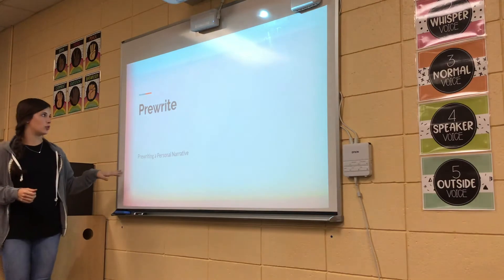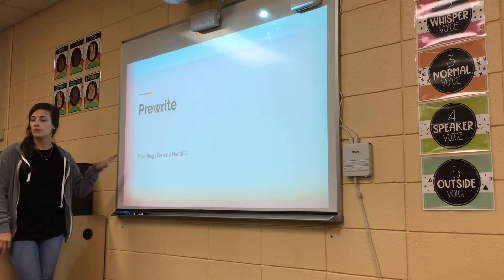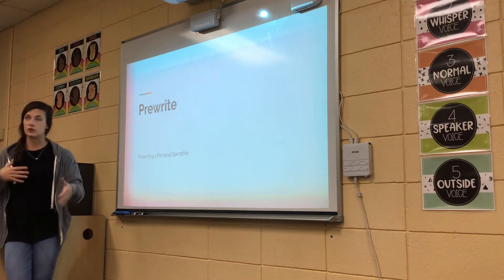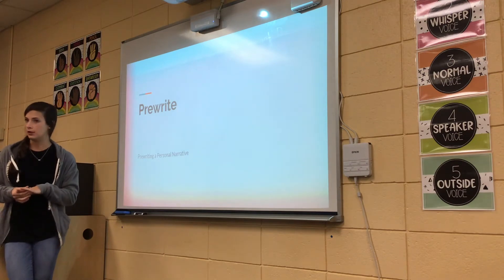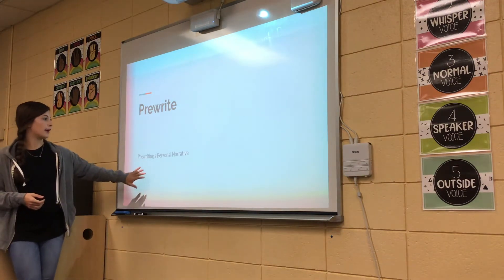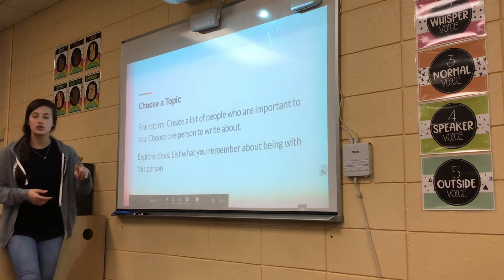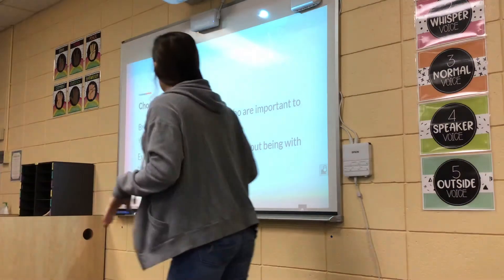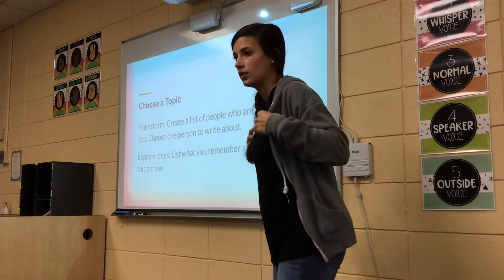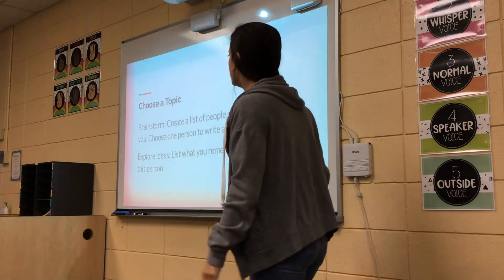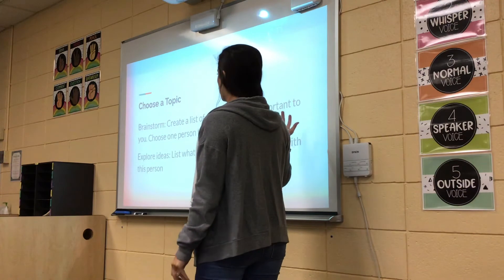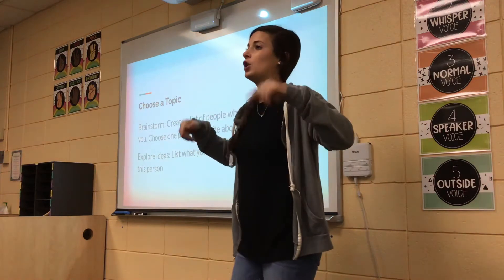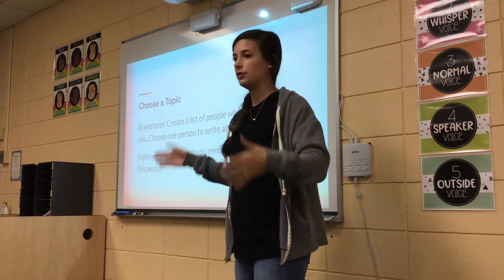So we got to the pre-write. We're going to learn how to write a personal narrative and we're actually going to write one. It takes several steps and we'll do it over the next week or so. Pre-write is your first step. First, you have to choose a topic — you have to decide what you're writing about. You brainstorm and create a list of people who are important to you, then choose one person to write about. That's our topic: someone important to you and what you've done with them.